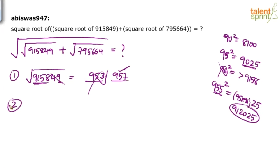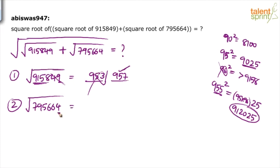Now do the same for the second term: find the square root of 795664. Step 1: the number ends in 4, so the answer ends in either 2 or 8. Step 2: forget about the last 2 digits and look at 7956. We need the highest perfect square less than 7956.